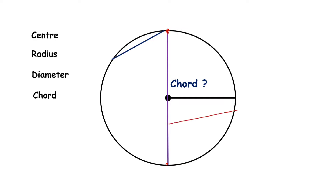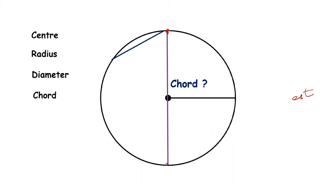The diameter is the longest chord of the circle. So diameter is also a chord, and it is the longest chord of the circle.